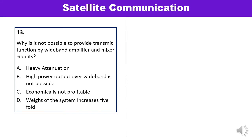Question 13: Why is it not possible to provide the transmit function using a wide-band amplifier and mixer circuit? Options are heavy attenuation, high power output, over wide band is not possible, economically not profitable, and weight of the system increases five-fold. No such components or circuit can do it nicely for high power output over a wide band — high power output over a wide band is quite difficult. Answer B is correct.